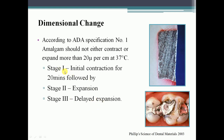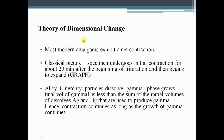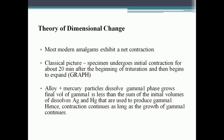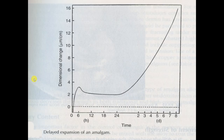Theory of dimensional change: most modern amalgams exhibit a net contraction. The classical picture shows the specimen undergoes initial contraction for about 20 minutes after the beginning of trituration, then begins to expand. In the first 20 minutes it is contracting, but after 20 minutes it expands and increases — this is the dimensional change.